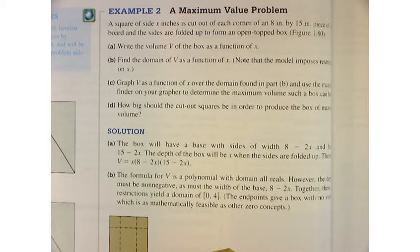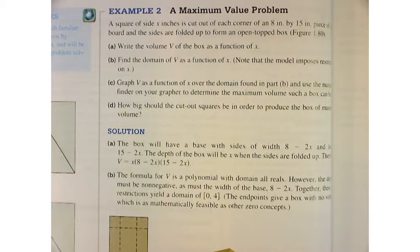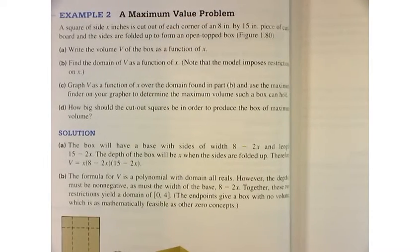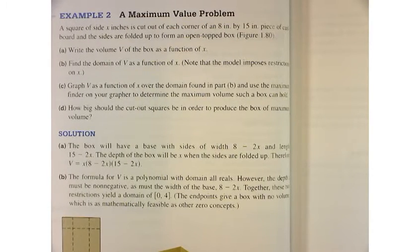This book says that a square of side x inches is cut out of each corner of an 8 by 15 inch piece of cardboard, and the sides are folded up to form an open top box.